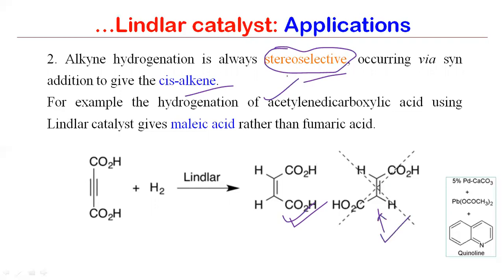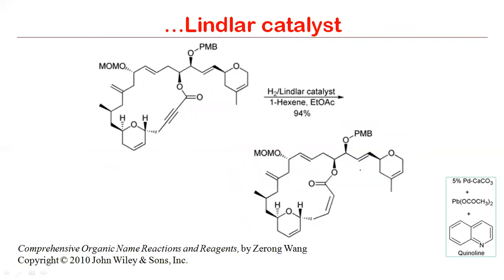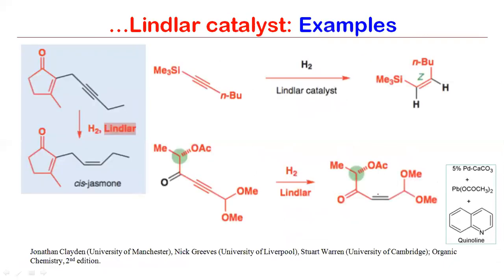For example, acetylene dicarboxylic acid treated with Lindlar's catalyst gives the hydrogenated alkene known as maleic acid as the major product. There is also an example from the Organic Reactions book by Zeroline: a compound with different double bonds, carbonyl groups, and many functionalities is treated with Lindlar's catalyst, and selectively only the triple bond is reduced — no other bond is reduced. That is the beauty of this catalyst.